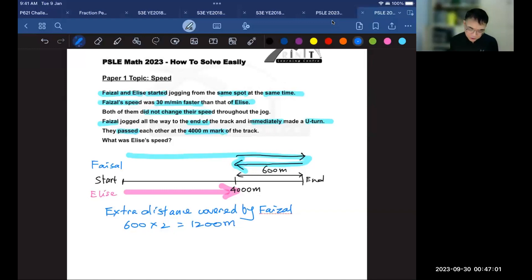If your answer was to take 1,200 meters and divide this by the extra distance he covers every minute, you will get 40. And what is the units for this 40? The answer is that it is 40 minutes, which is the time taken for Faisal to travel this extra distance.